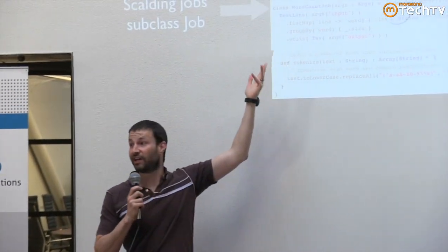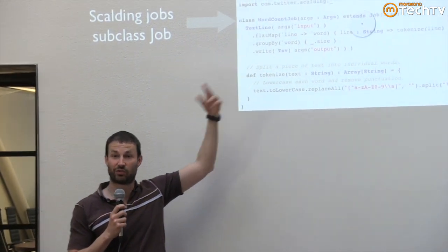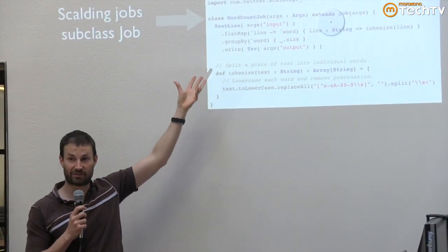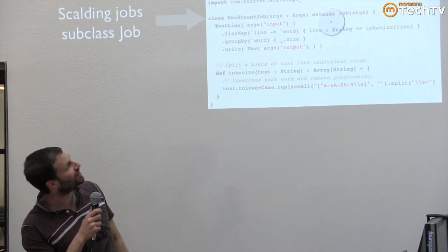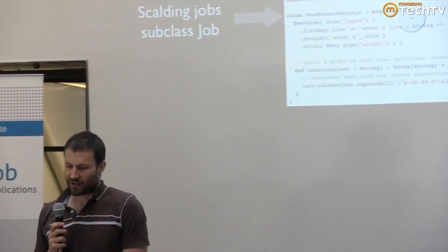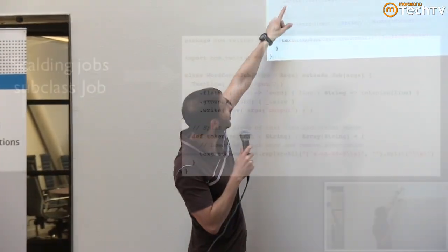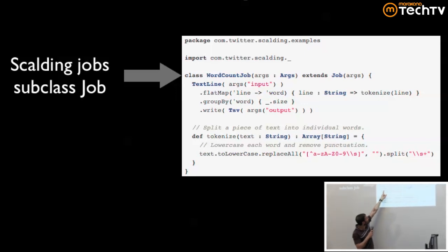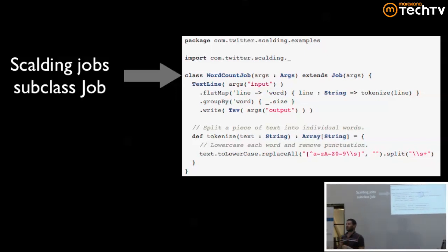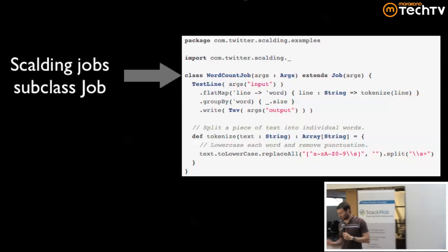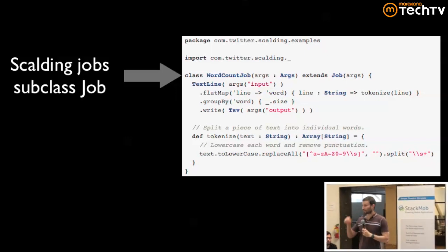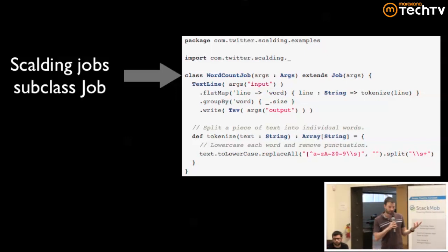A question came up: what are the types here? The type of this object is a source representing where data is read or written on Hadoop. But in between, Scalding is a Scala library — it's a DSL for Cascading, a Java library that represents computations as pipes — basically things flowing around. You can think of these pipes as lists.